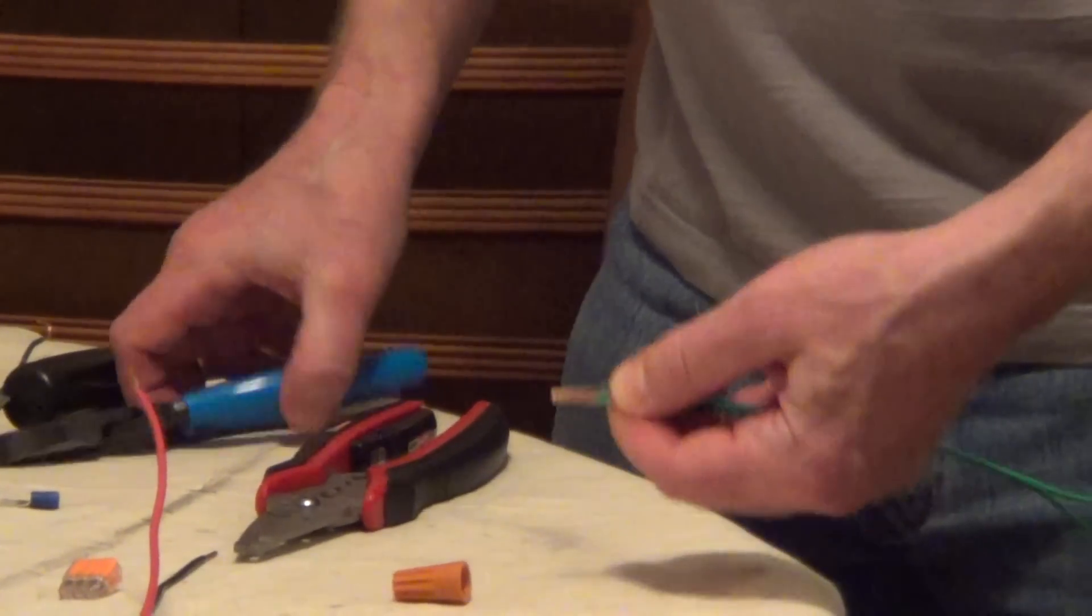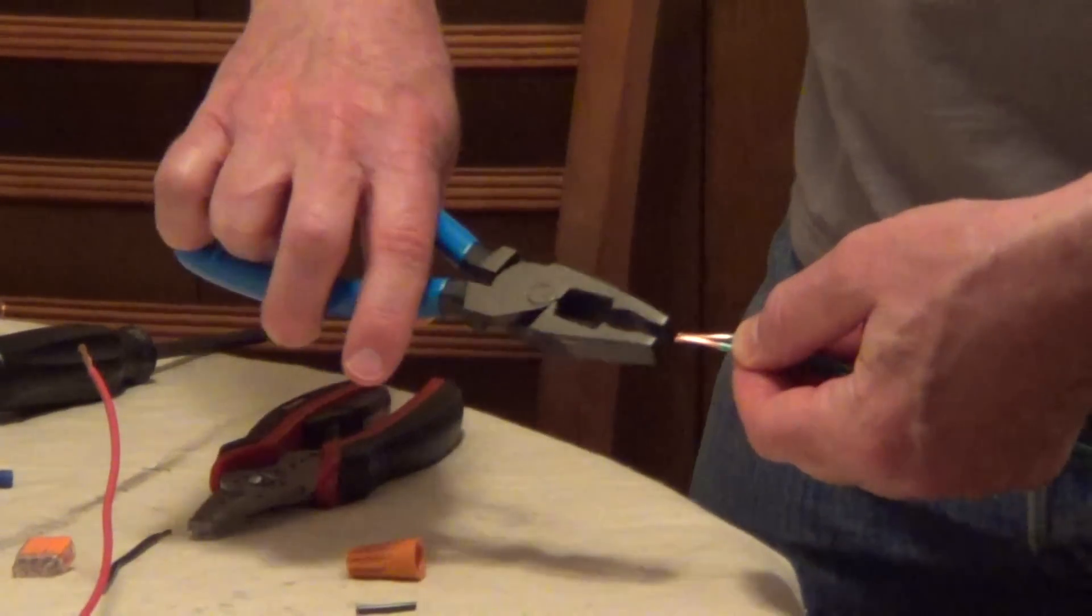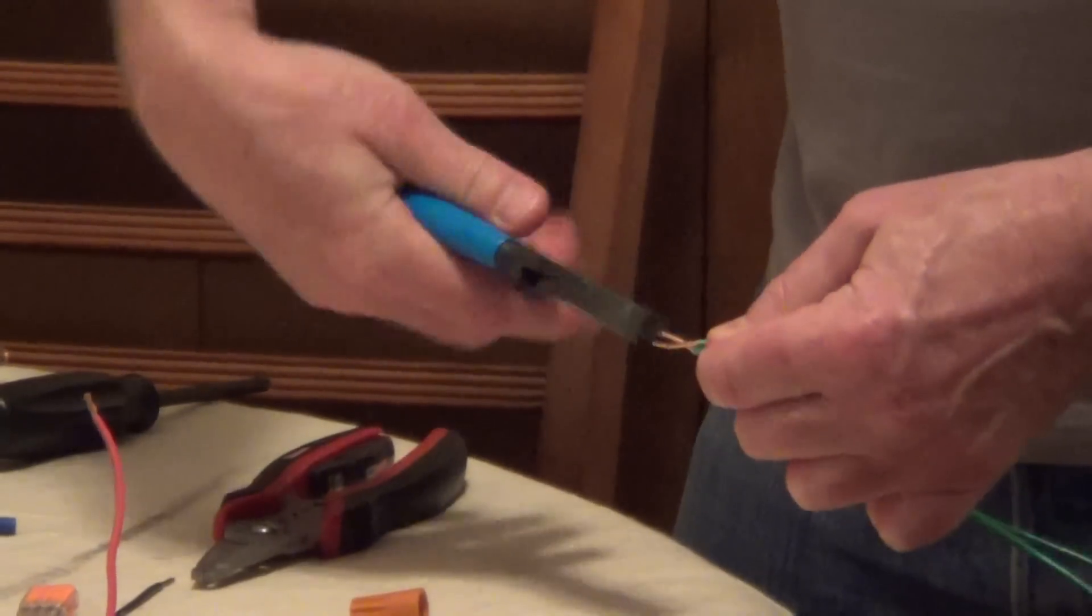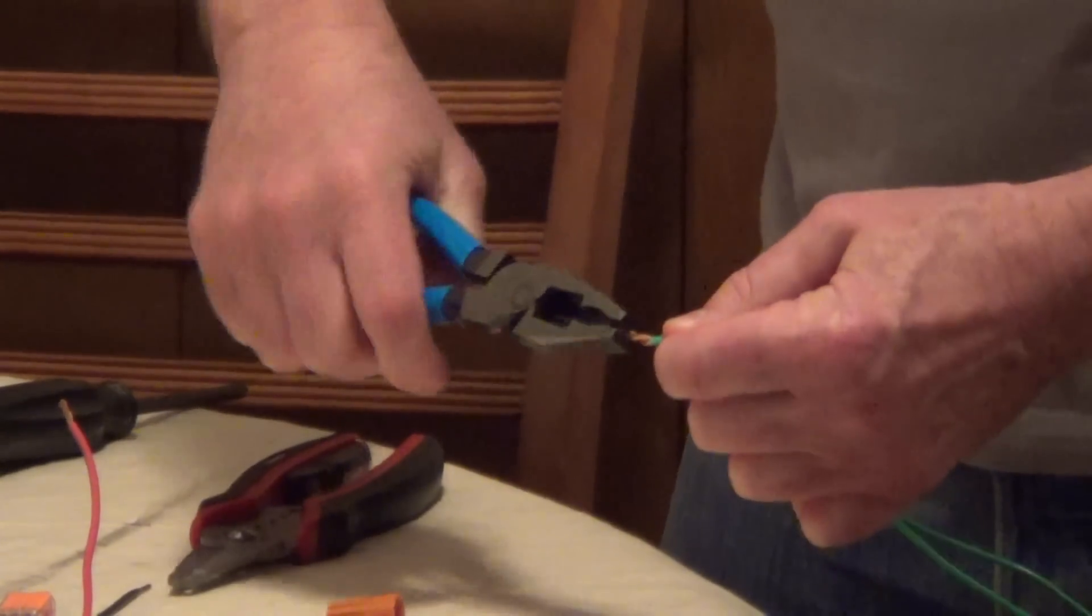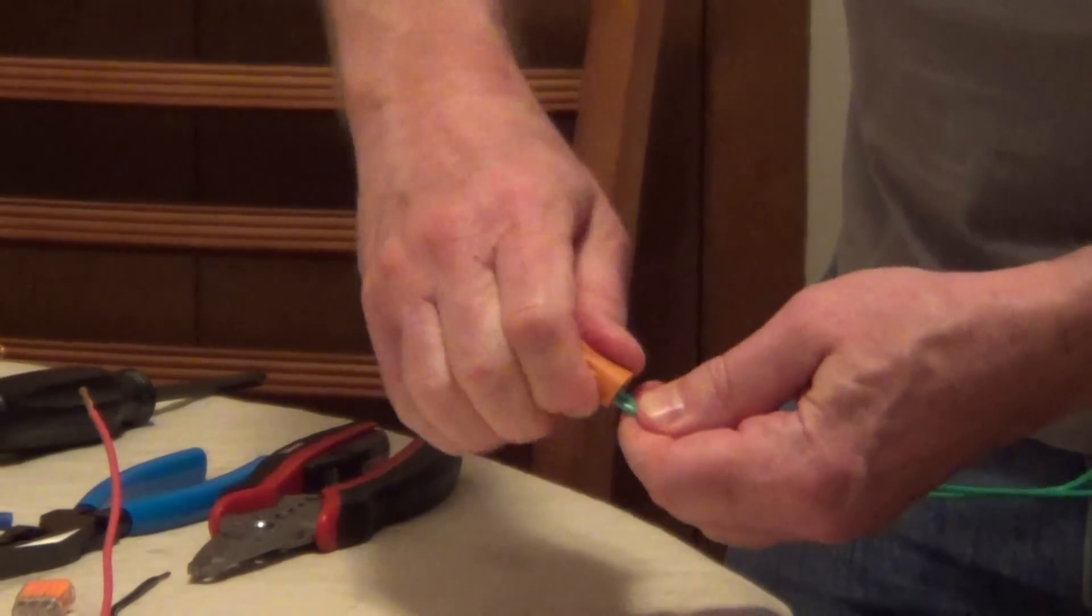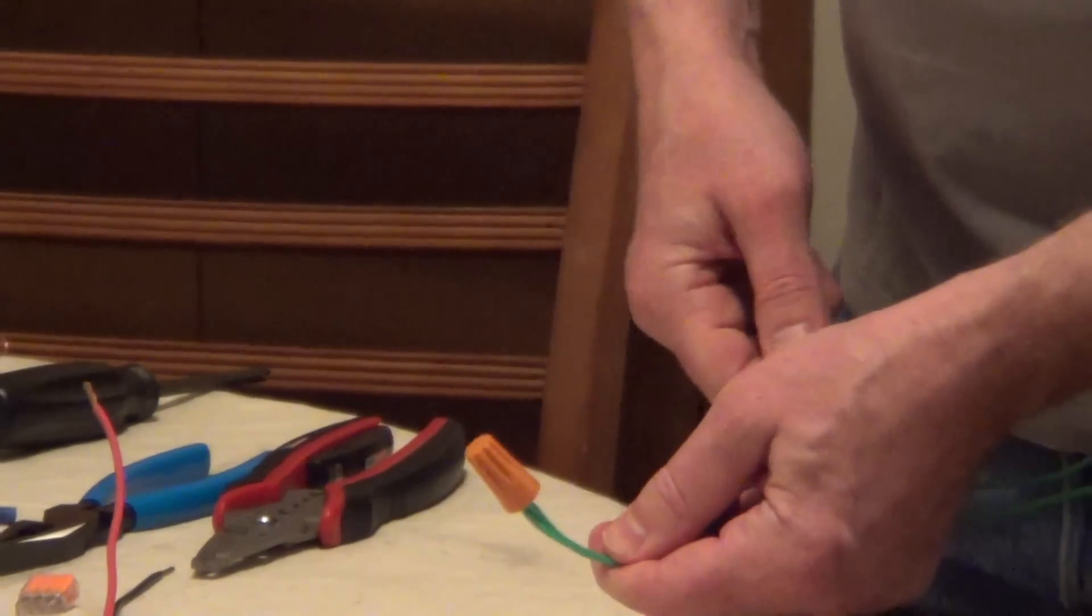And when you're connecting your wires, put your wires together, take a pair of Linesman pliers and give it a couple twists. And this is going to make just a very nice, solid connection when you twist on a wire connector.